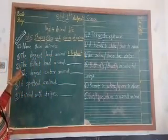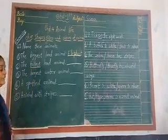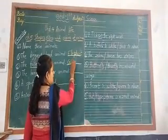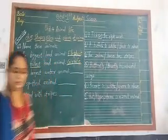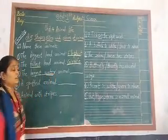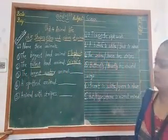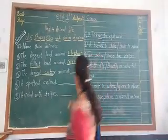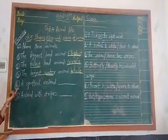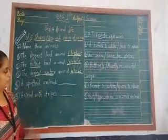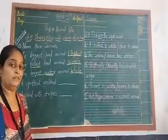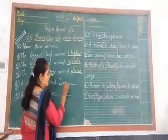The tallest land animal — here is the word tallest, which means the tallest. You are correct, the tallest animal is giraffe, G-I-R-A-F-F-E. Third one: the largest water animal. The largest water animal is whale. We will write whale, W-H-A-L-E. Number four: a spotted animal. Animals having spots on their body — giraffe, cheetah, leopard, deer. We will write leopard or deer.